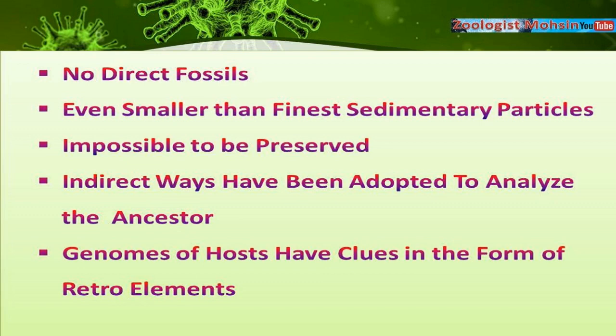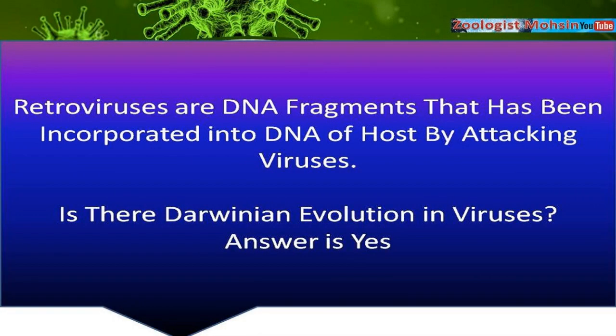There are no direct fossils of viruses preserved in mineral rocks like other organisms that can be morphologically analyzed. The reason is that viruses are so small — even smaller than the finest particles of sedimentary rocks — so it is difficult to sort them out directly. But virologists are not accepting defeat. They have adopted indirect ways to construct the phylogeny of viruses. One method is to study the respective host in which the virus resides and reproduces. Retroviruses are DNA fragments incorporated into the host's DNA by viruses, and by studying these retroelements in host DNA, virologists have been able to construct a life tree to some extent.